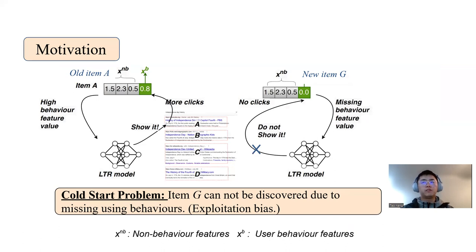Since behavior features are usually very strong signals for relevance, the ranking model will rely more on behavior features, which means new items will be hard to discover. We name this the exploitation bias, which means the learning to rank model exploits behavior features too much.